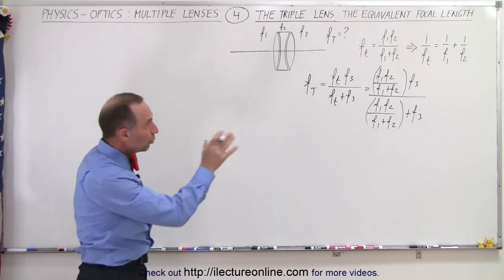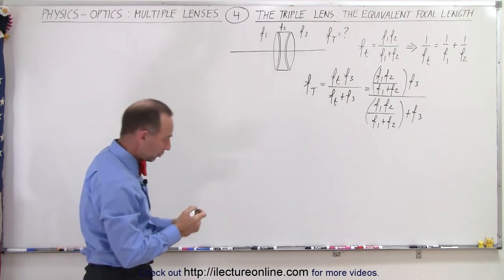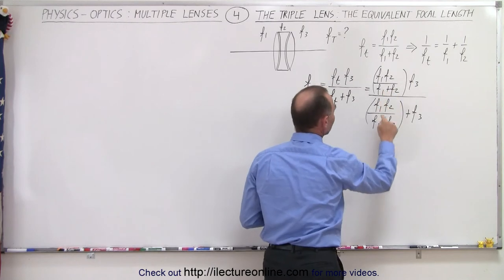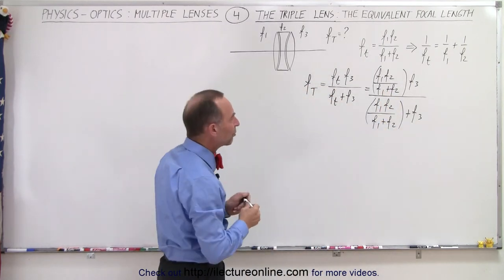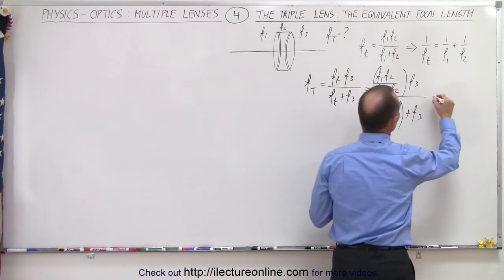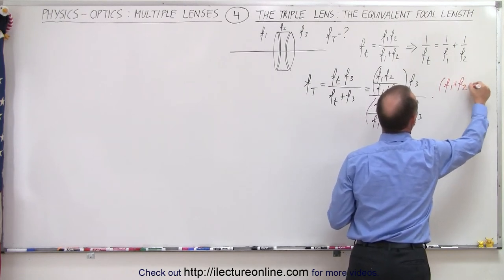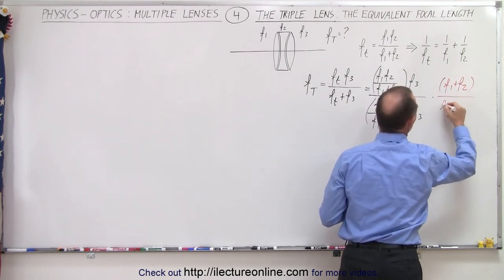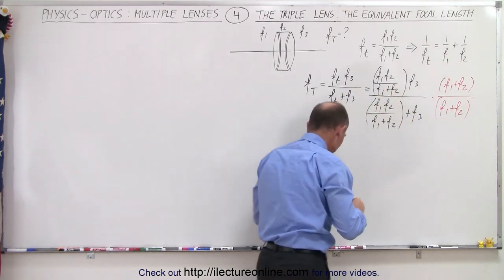Now notice that both in the numerator and the denominator, we have a denominator that says f1 plus f2. We have it over here, we have it over there. We don't have it there, but we could probably simplify the equation by multiplying both the top and the bottom by f1 plus f2. So let's go ahead and do that. So multiply the top by f1 plus f2, and we'll do the same for the bottom, f1 plus f2. Okay, if we do that, the equation will look as follows.